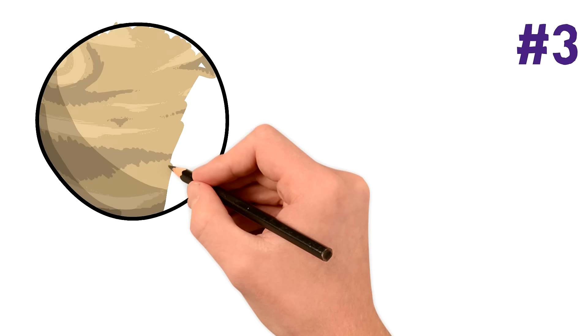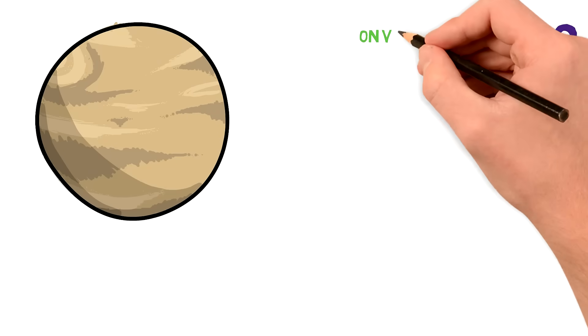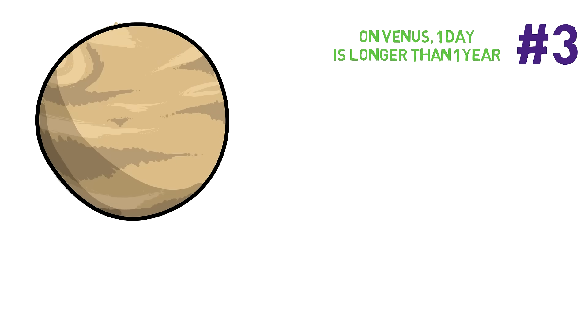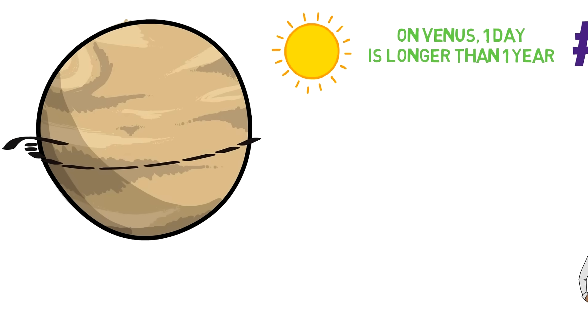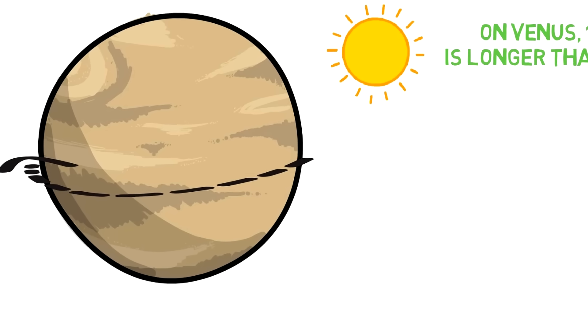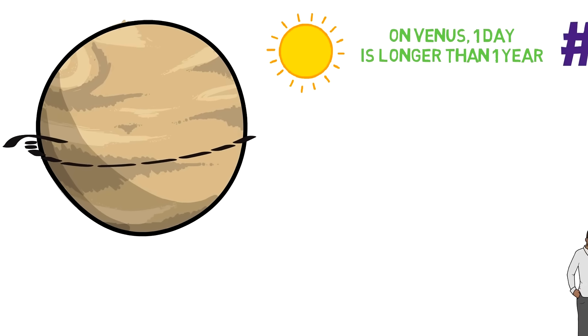Number 3. One year on Venus is shorter than its day. Venus is the planet in the solar system which rotates at the slowest speed. It rotates so slow that it can complete a full orbit around the sun before fully rotating 360 degrees on its axis, which makes it so that their day is longer than their year.